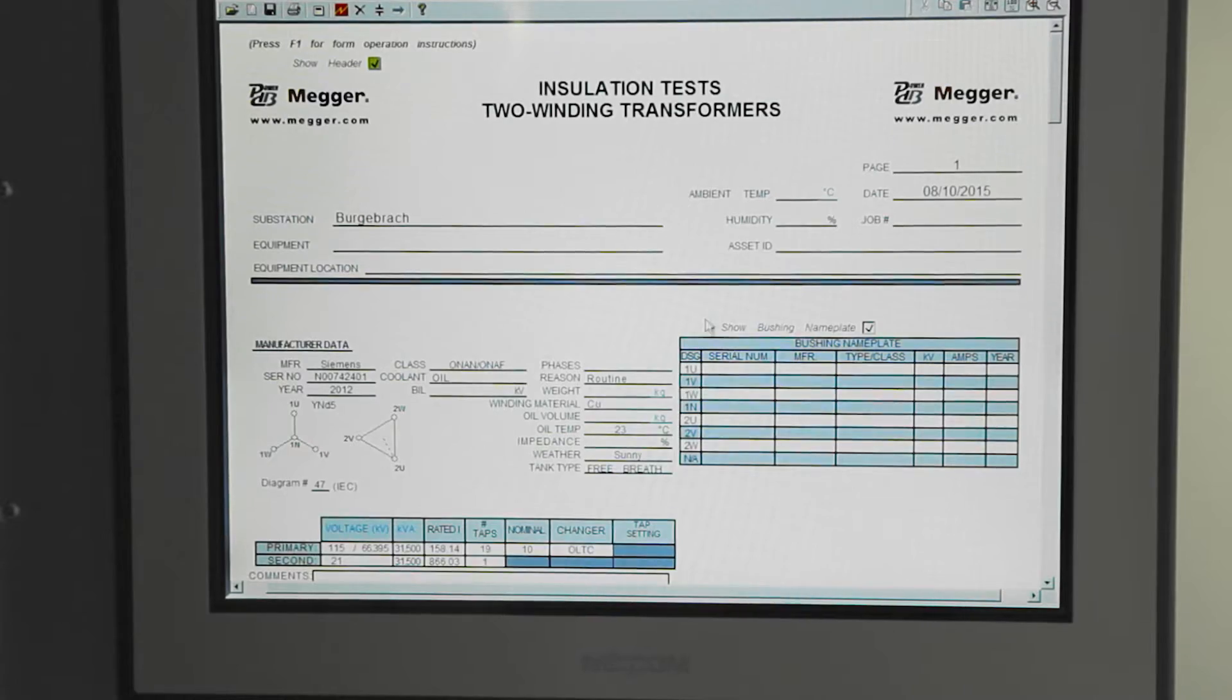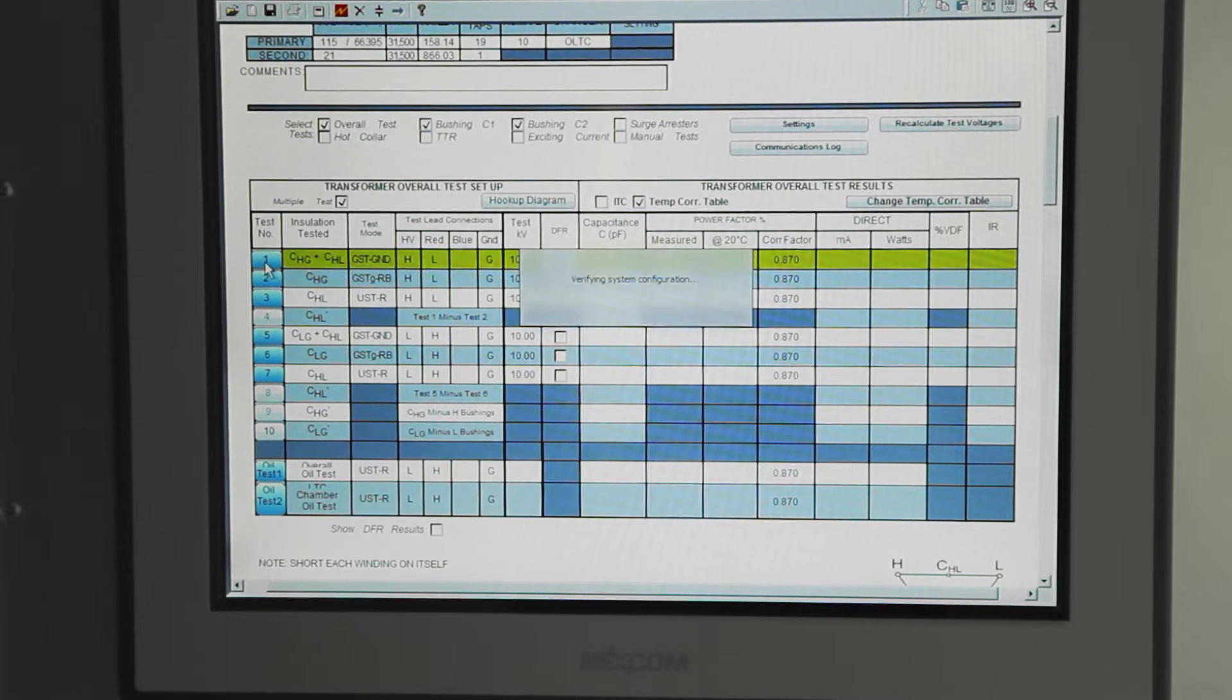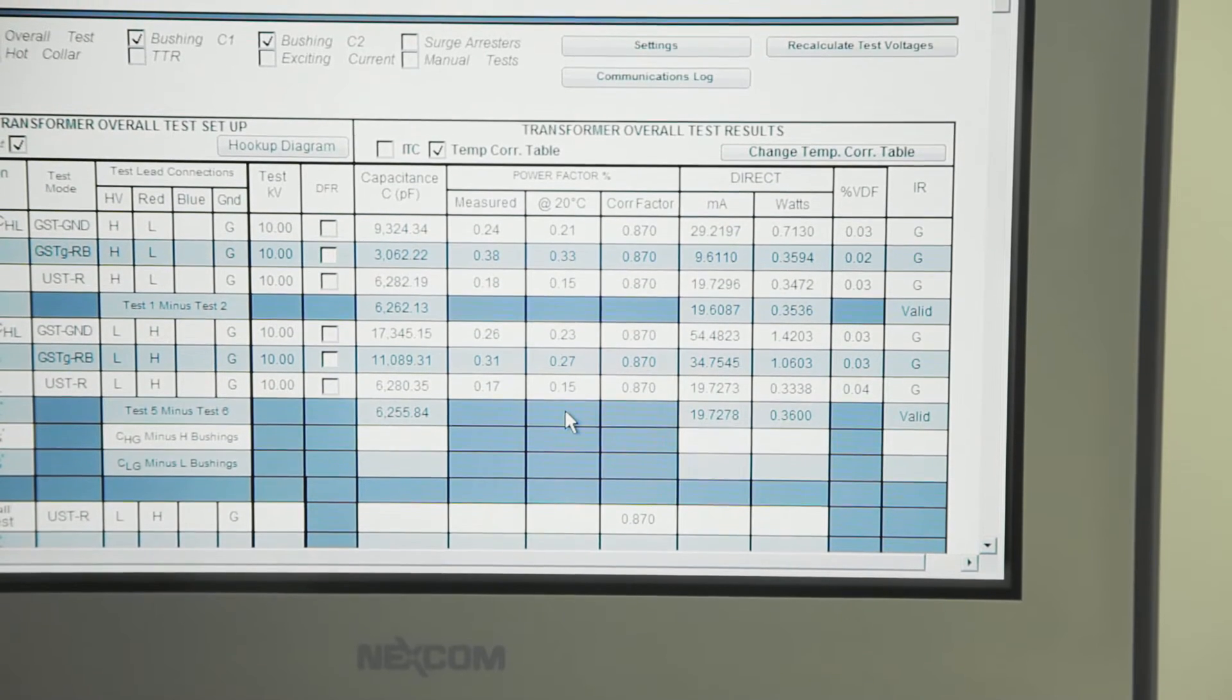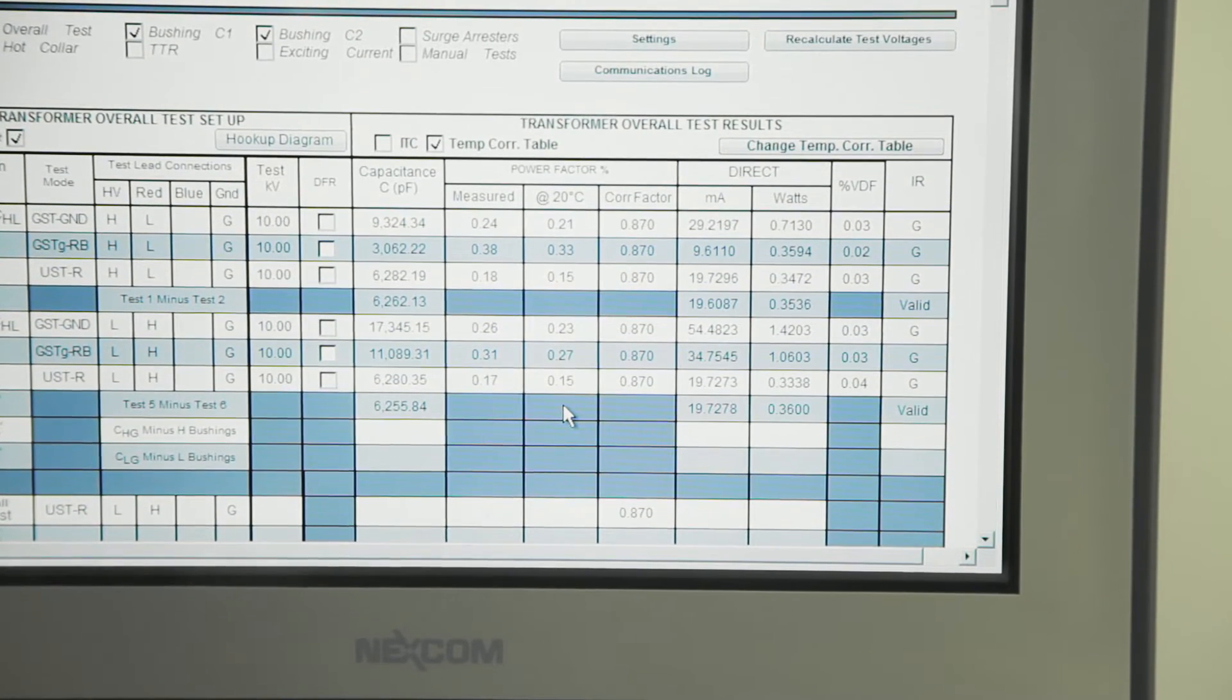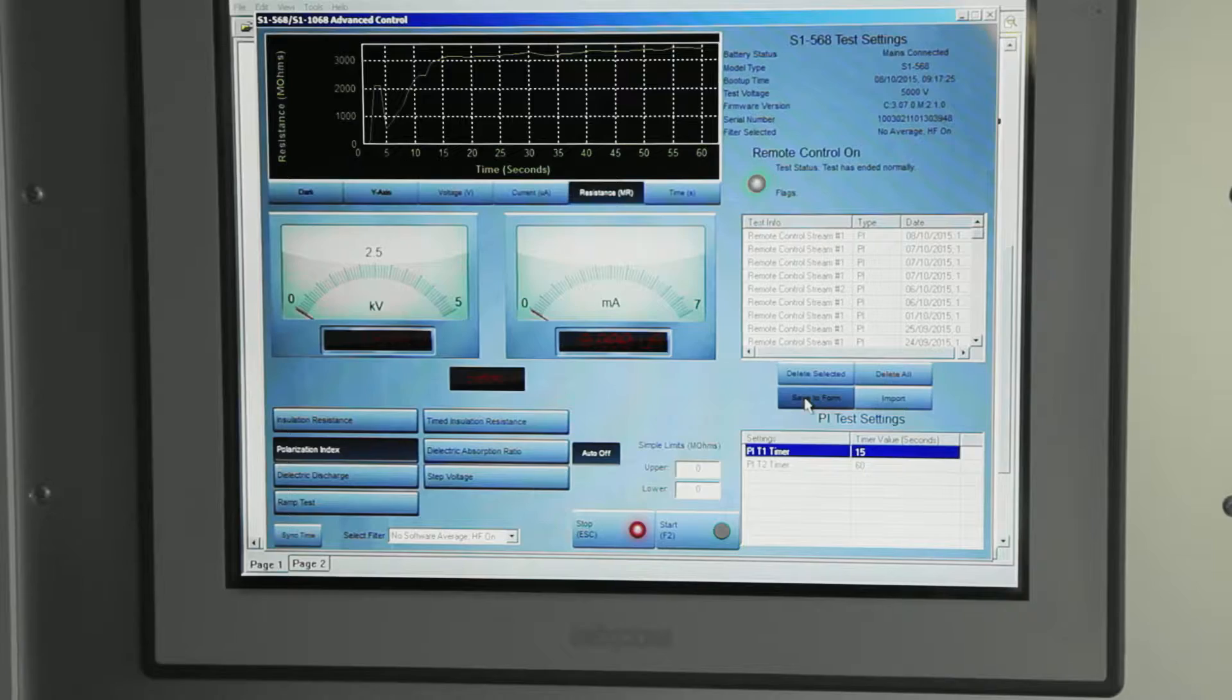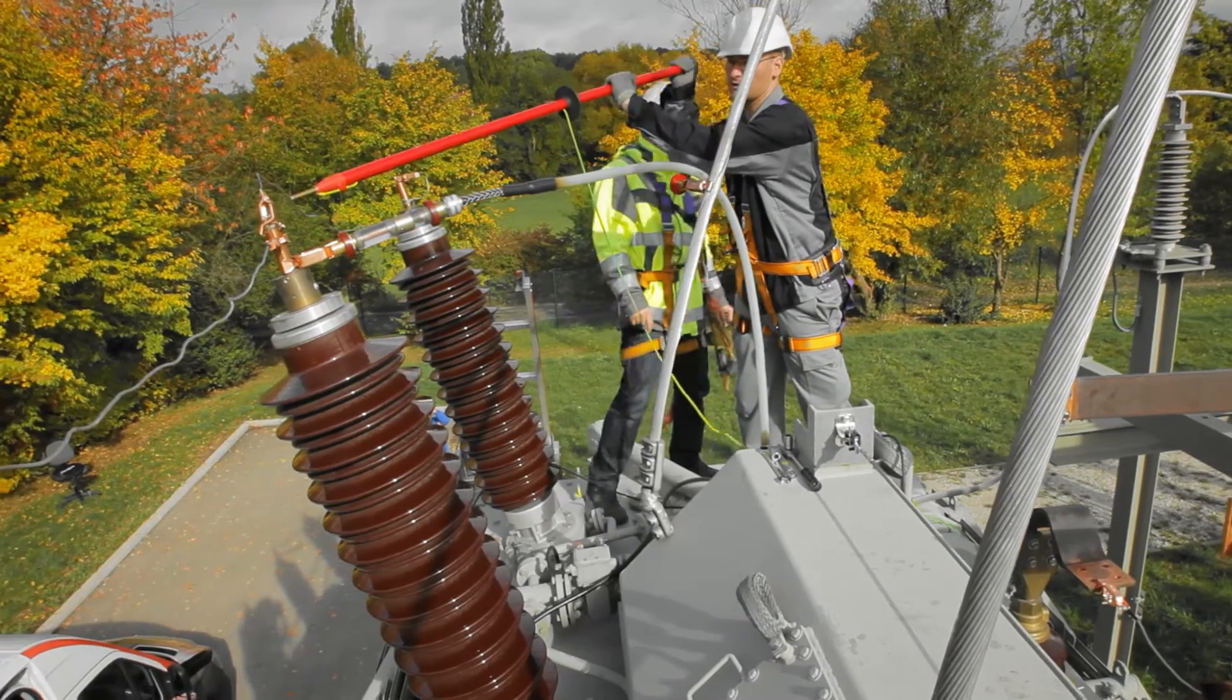Insulation tests can identify the deterioration of electrical insulation. High voltage AC tests measure the dissipation or power factor and capacitance of transformer windings and bushings. Insulation resistance is determined between windings and tank using a high voltage DC source.